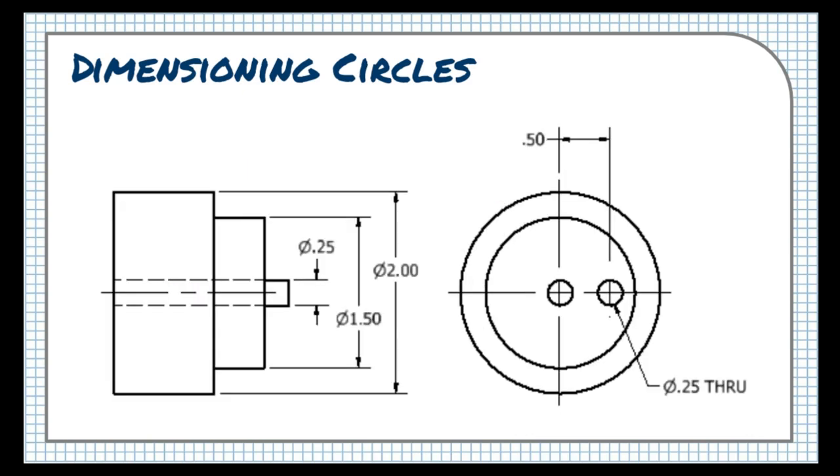Cylindrical objects are sometimes dimensioned like this, with several diameters given in a side view, but wherever possible, it's preferred to show the dimensions of rounded edges in the view where they appear round.